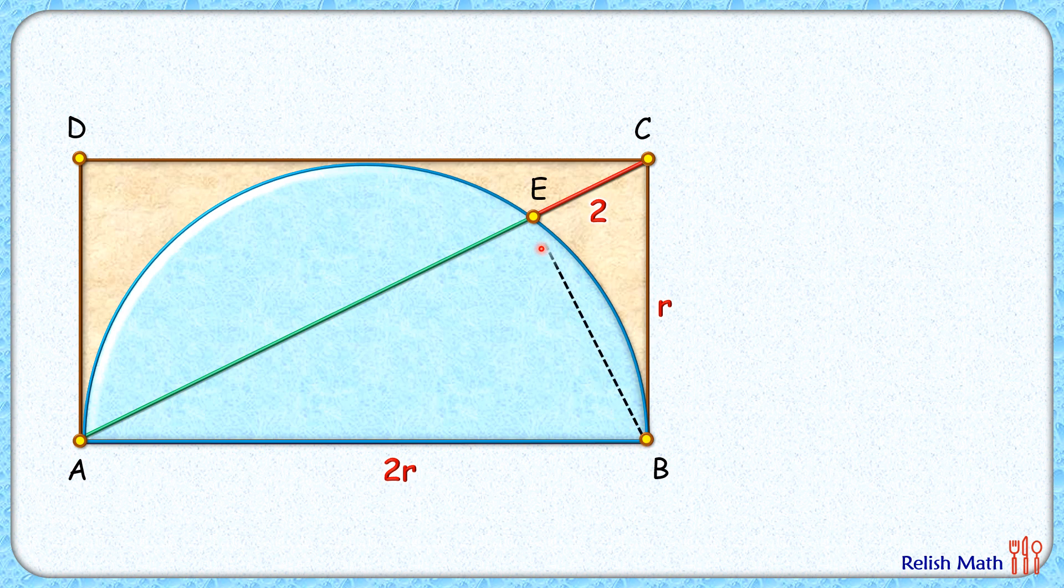Let's join BE. Now, AB is the diameter, and we know by theorem that a diameter always sustains an angle of 90 degrees at the circumference. Now, in this pink triangle, triangle CEB...